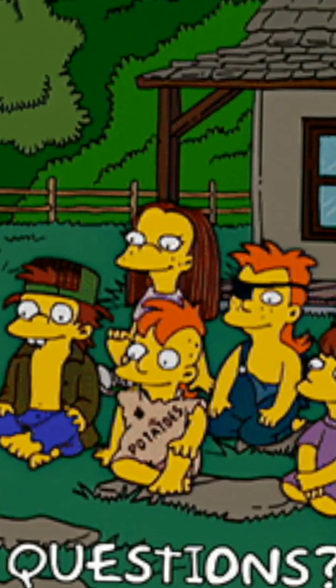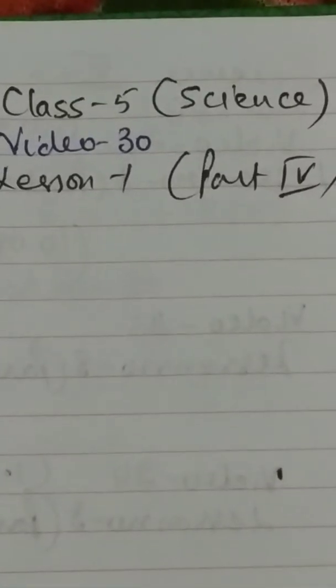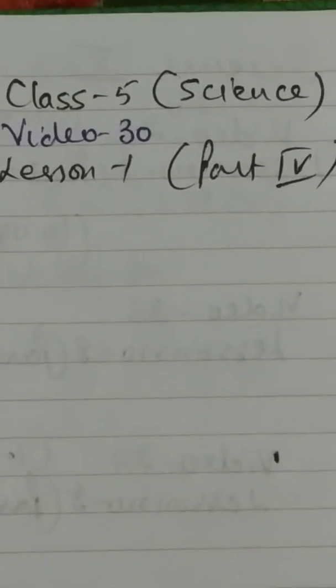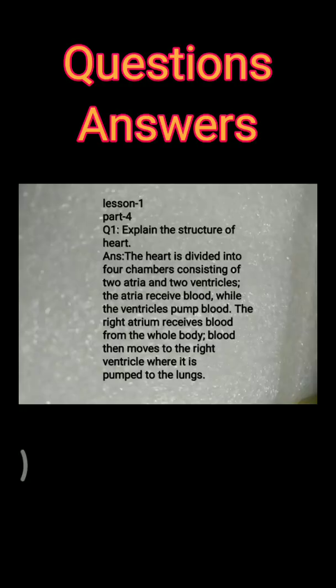Good morning students. This is video number 30 of Class 5 Science, part 4 of lesson number 1, the circulatory system. Part 4, question 1: explain the structure of the heart.